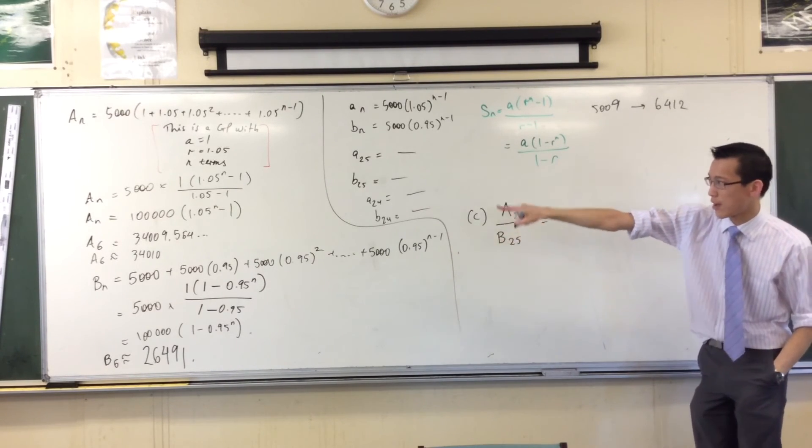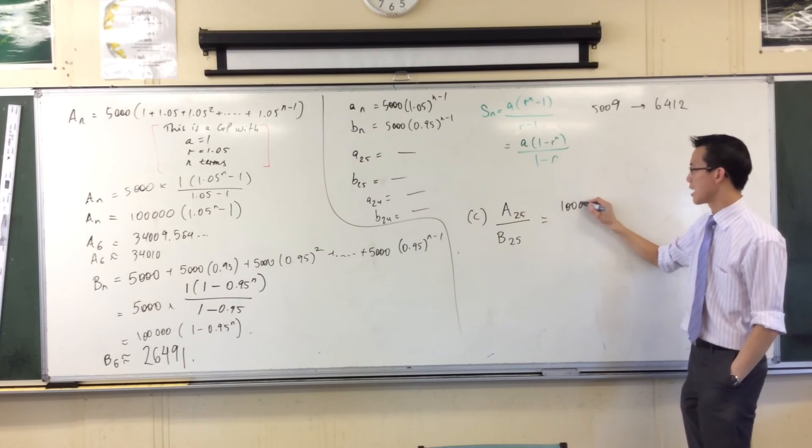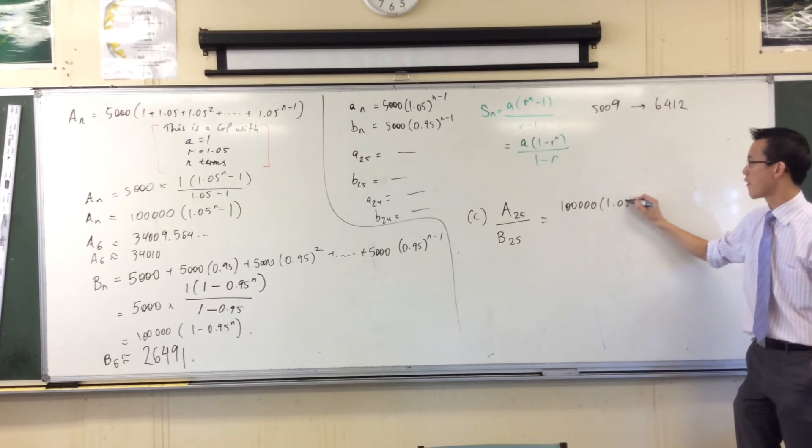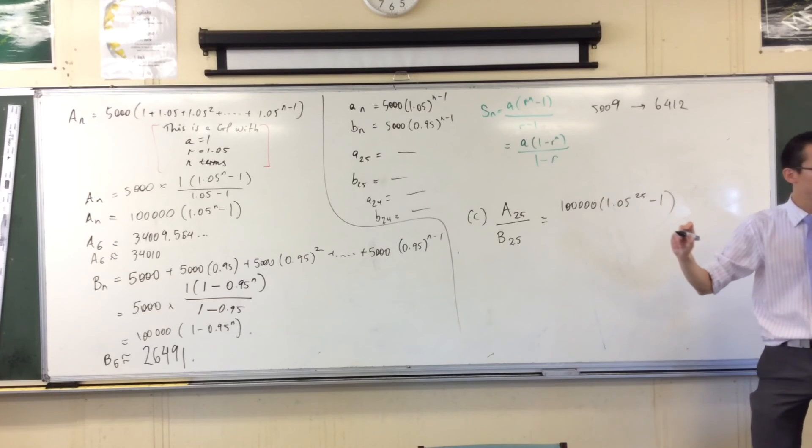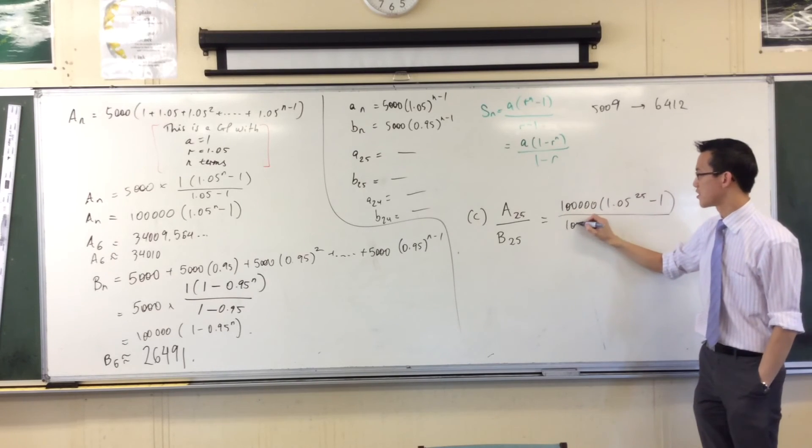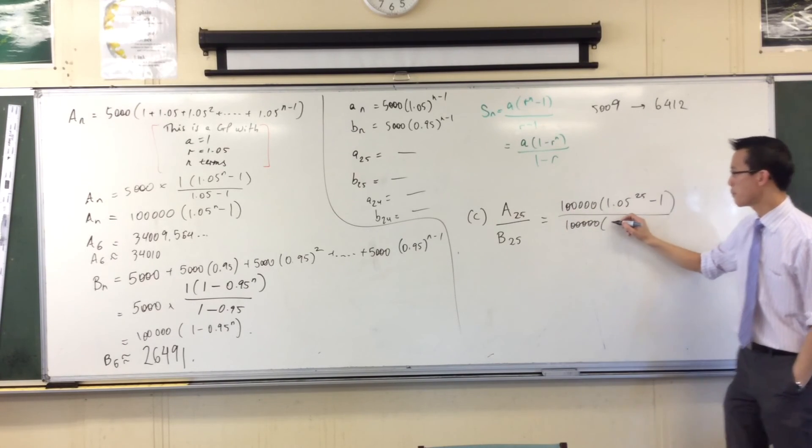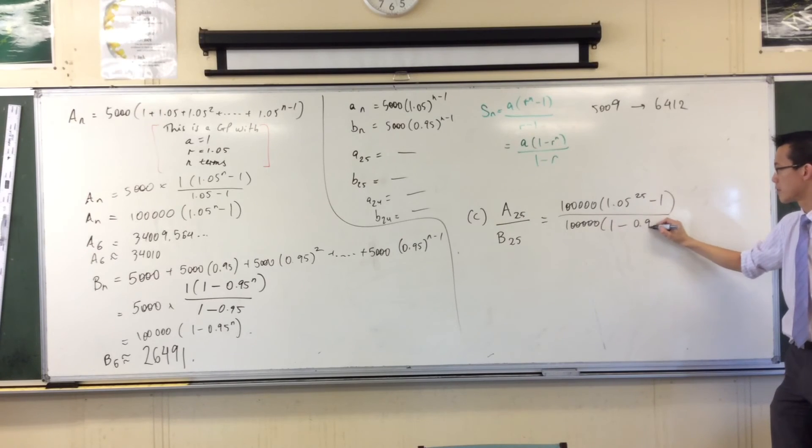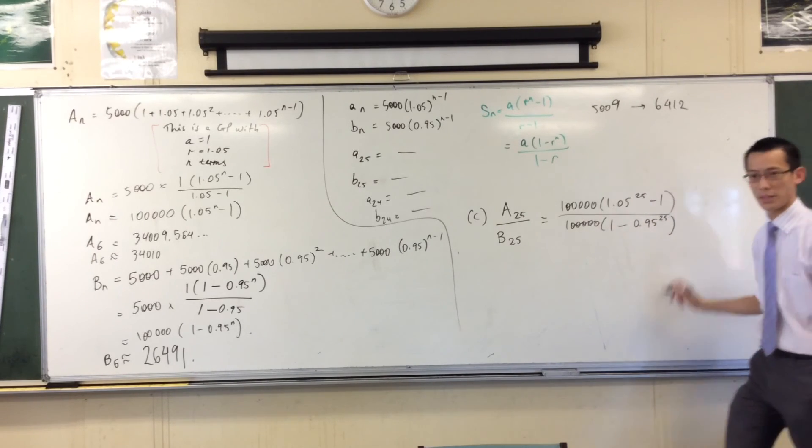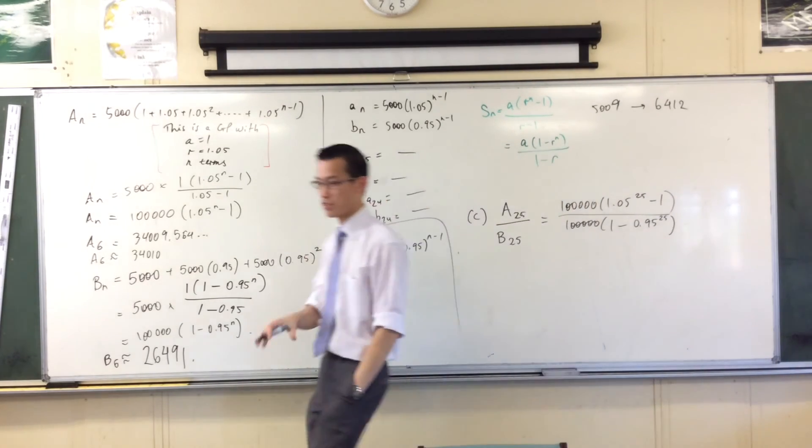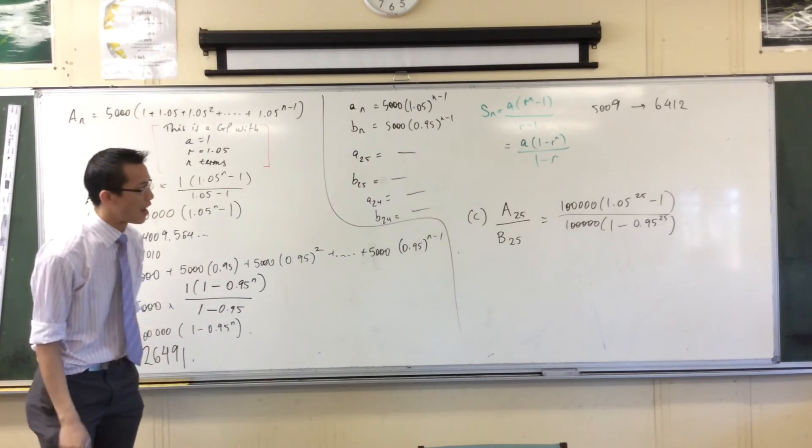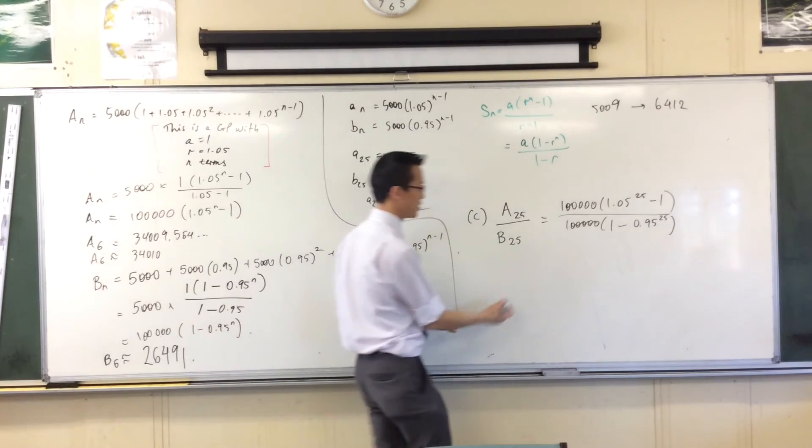Where's A 25? There it is. 100,000 times 1.05 to the 25 minus 1. And I have the same 100,000 here, but it's 1 minus 0.95 to the 25. So you've got the index notation there on your calculator. Someone crunch your number for us, three significant figures.